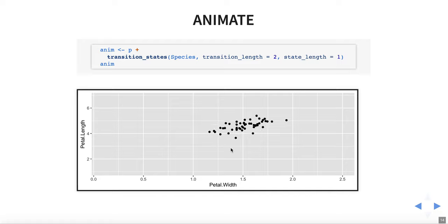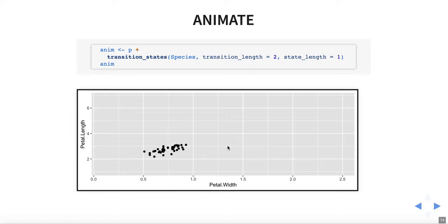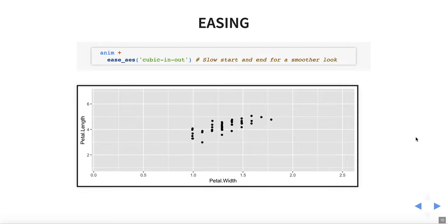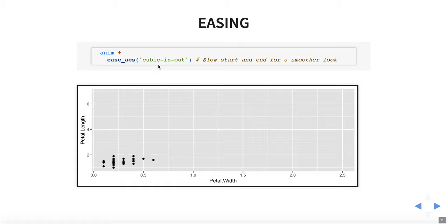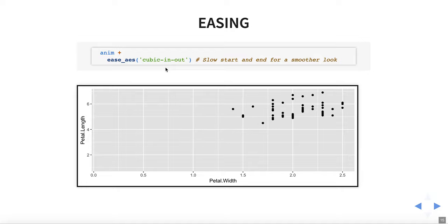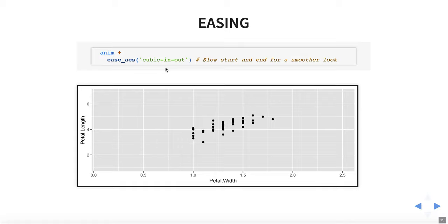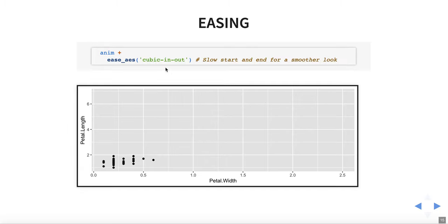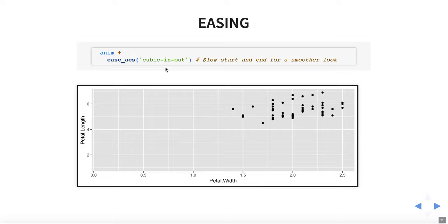Our plot is animating itself through the three different species groups. If we want to change how the animation looks, the ease_aes parameter comes in — I used cubic-in-out. There are a few options to pick from. I didn't know what cubic-in-out meant when I created this; I tried a few and this looked the best. What it does is make the animation a little bit more elastic, more springy, as the look for the animation.